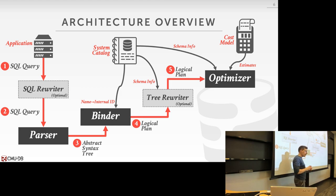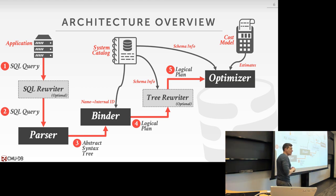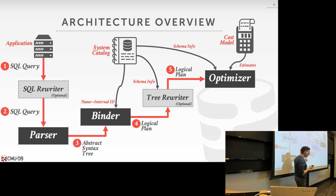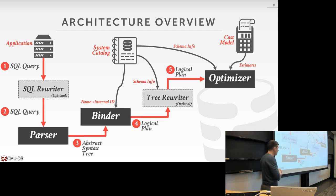The cost model is a synthetic number the database computes internally. It has no meaning to the outside world — you can't say 'that's going to be 20 seconds.' It's used to compare plans relatively inside the database system. Postgres's cost model spits out a number, MySQL's cost model spits out a number — you can't compare them. Some systems try to have cost model estimates be tied to actual time, but that's tricky and usually not reliable because hardware and environment change.